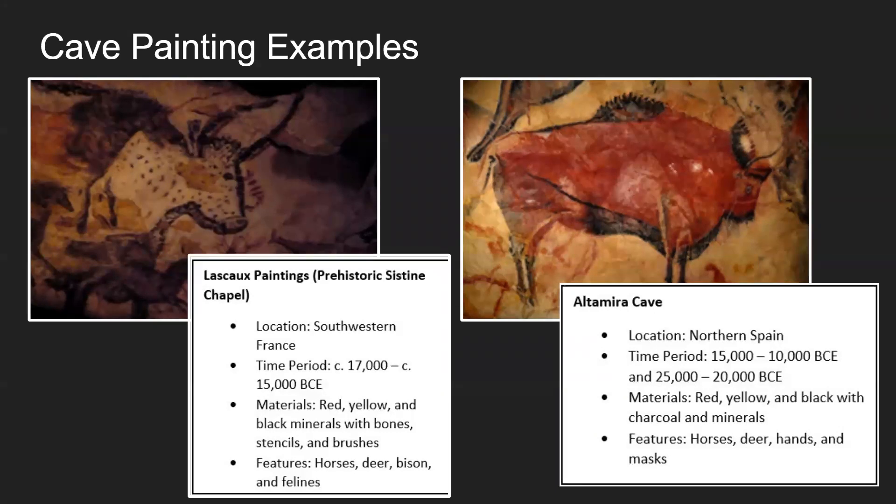Most commonly in the Lascaux paintings, there were horses, deer, bison, felines (which are cats), bulls, and some humans. It's called the Prehistoric Sistine Chapel because those paintings are so well preserved and very detailed — people thought they were fake. Actually, a group of kids and their dogs stumbled into the cave and found it. So most often, cave paintings are discovered by accident.